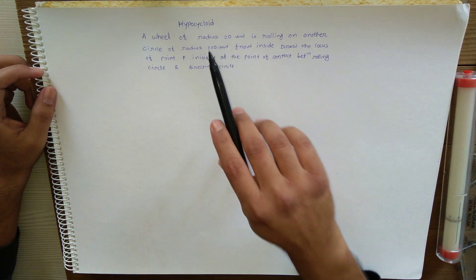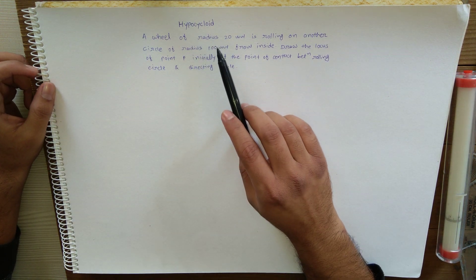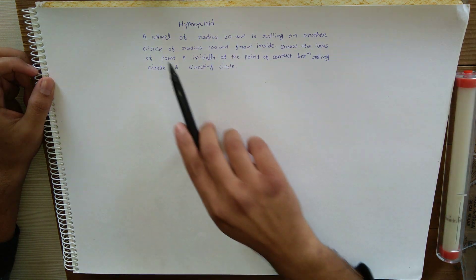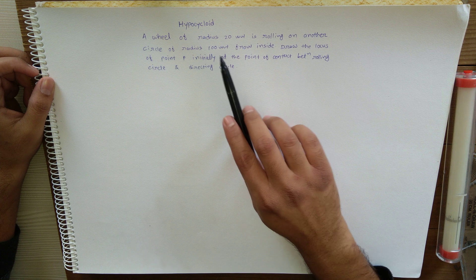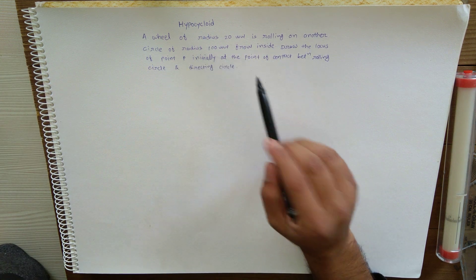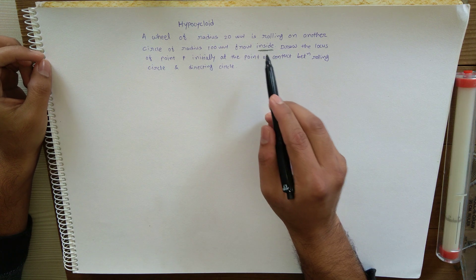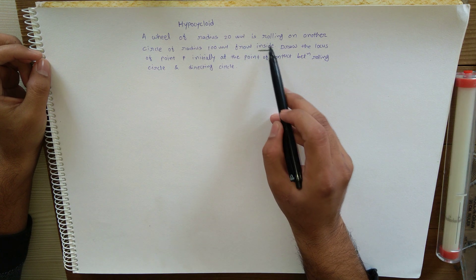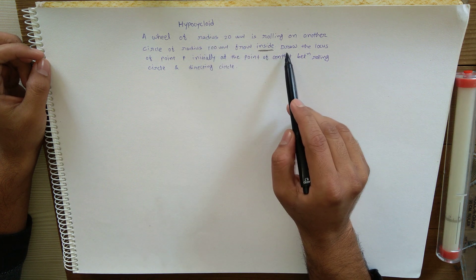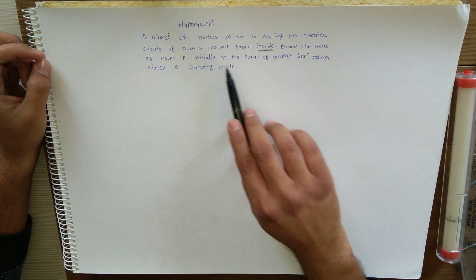Hello friends, in this video I am going to discuss hypocycloid of the cycloid family curve. This is the given data: a wheel of radius 20 mm is rolling on another circle of radius 100 mm from inside. This word 'inside' indicates that the curve will be hypocycloid. Draw the locus of point P initially at the point of contact between rolling circle and directing circle.